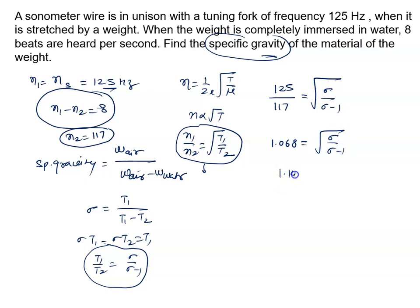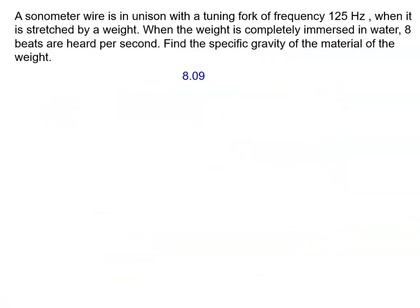It is 1.141 equals sigma upon sigma minus 1. So 1.141 sigma minus 1.141 equals sigma, we will solve, sigma will be 8.09. So specific gravity of the material is 8.09.